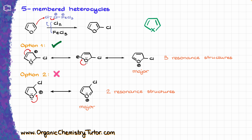By doing this resonance analysis, we can easily see that when it comes to our 5-membered heterocycles, the substitution goes into the positions right next to the heteroatom — the C2 and C5 positions of the ring. Of course, if you have other groups on your molecule, those other groups could potentially influence your substitution as well, so you would have to do a more involved analysis, but in the easiest case, that's what we are going to be seeing.